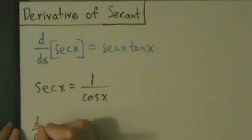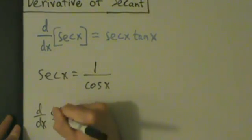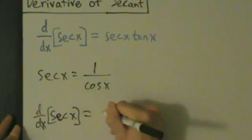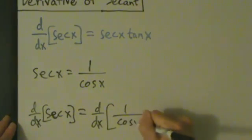So d dx of secant of x equals d dx of 1 over cosine of x.